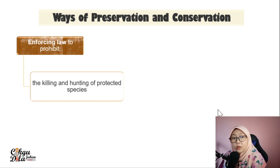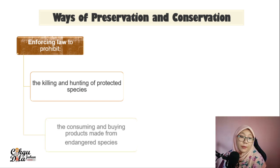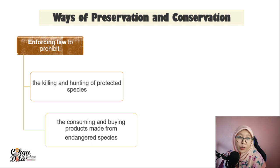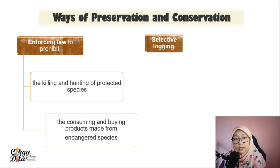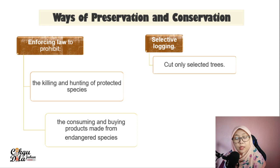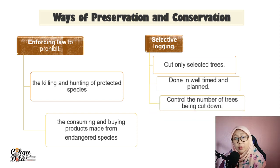Another way is enforcing laws to prohibit the killing and hunting of protected species, and to prohibit consuming and buying products made from endangered species. We can also practice selective logging — cutting only selected trees, done in a well-planned and well-timed manner, controlling the number of trees being cut down.